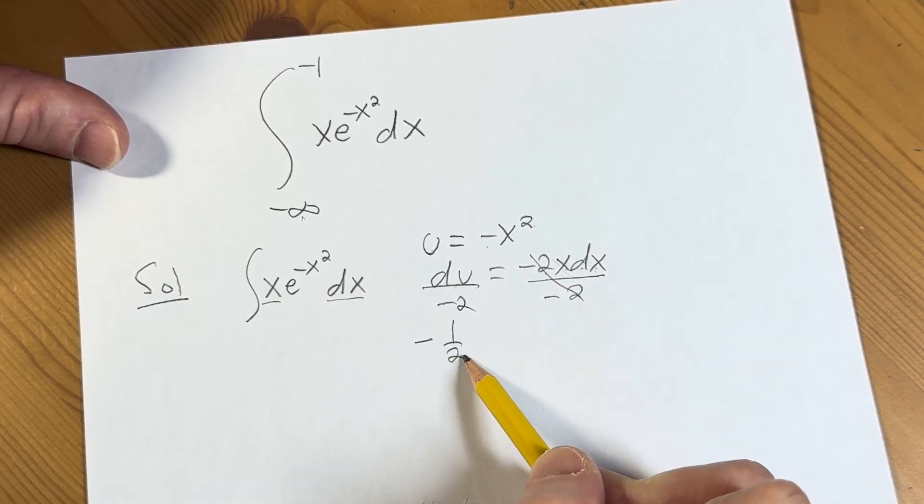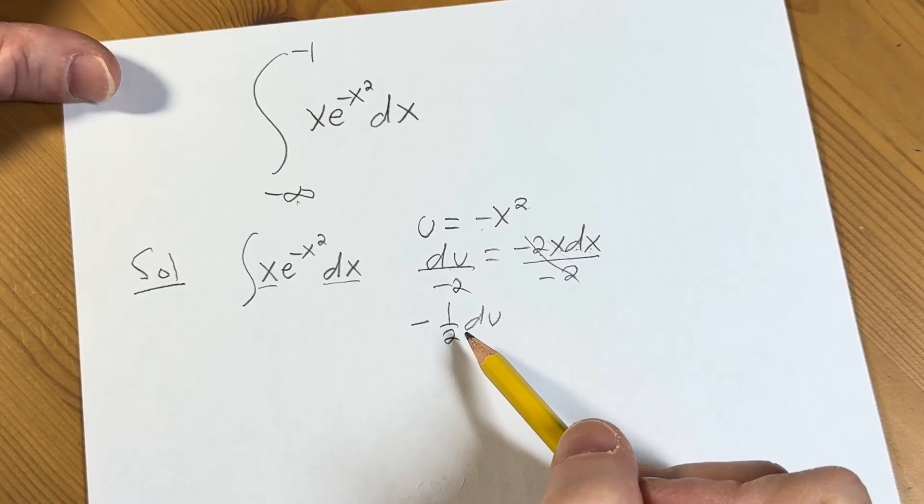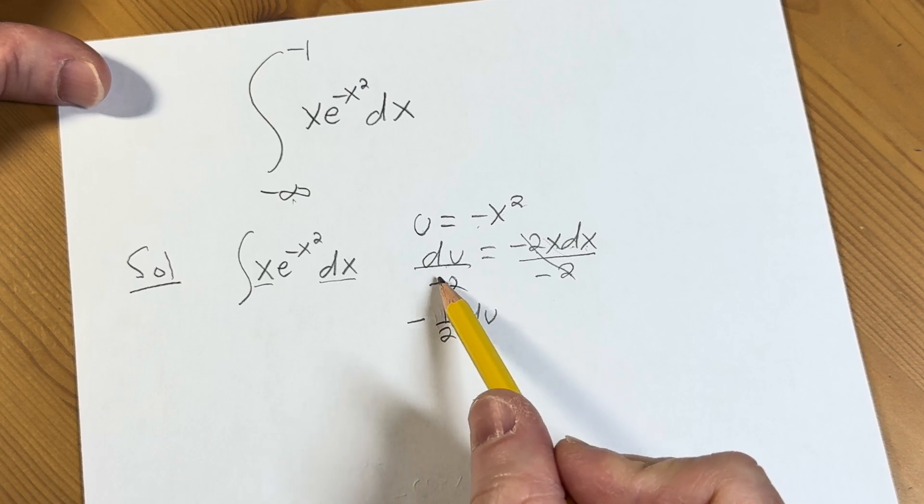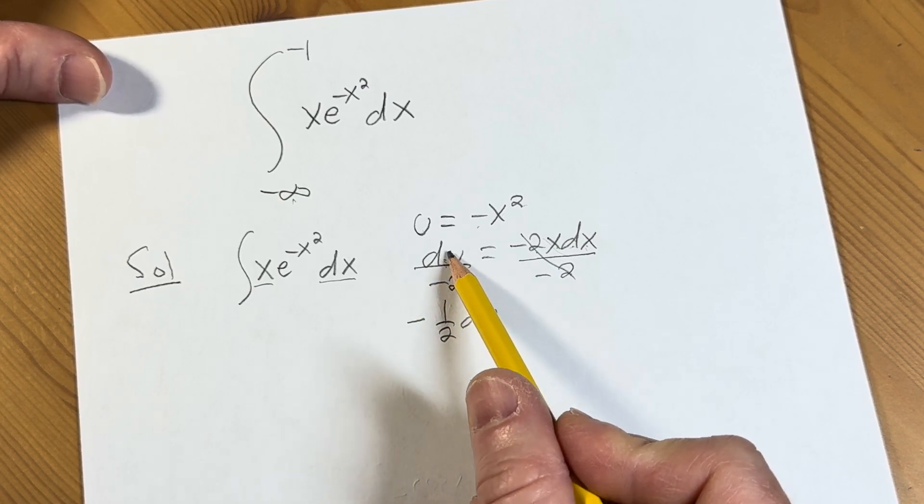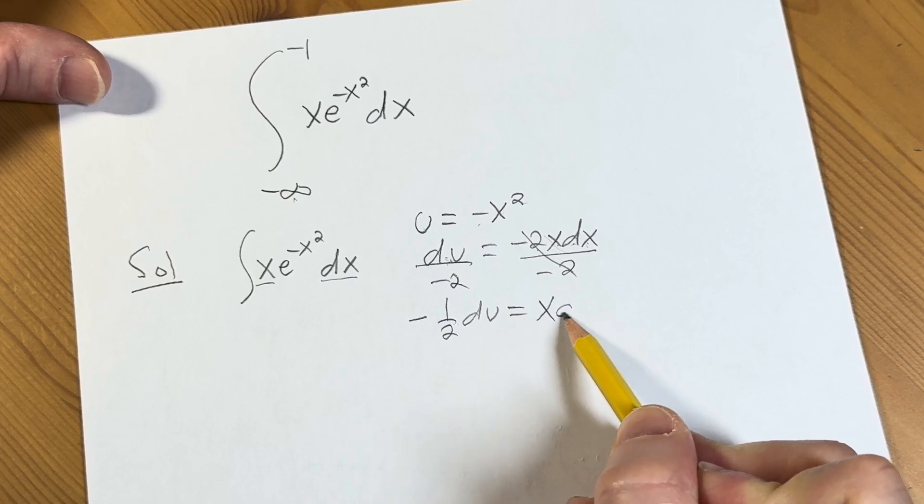And when we do that we're essentially making this look like this, right? So this will be negative 1 half du. I'm writing it that way because I know that later I'm going to pull out the minus 1 half. That's just because I have some foresight. And the more you do these problems, the more you realize that whenever you have something like this, this is a good idea. And this is x dx.